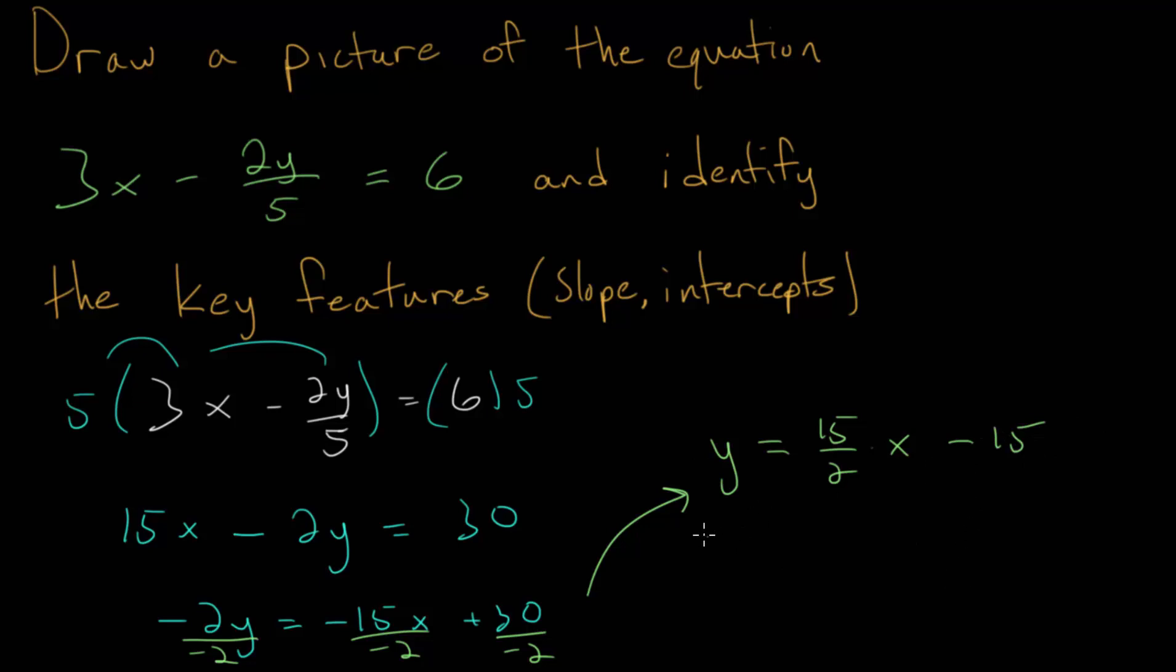In general, if we have some linear equation, solve for y, y is equal to mx plus b. The number multiplied by x, which is m in this equation, this is our slope, the steepness of the line. And b is the y-intercept.